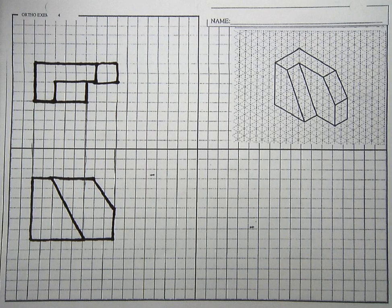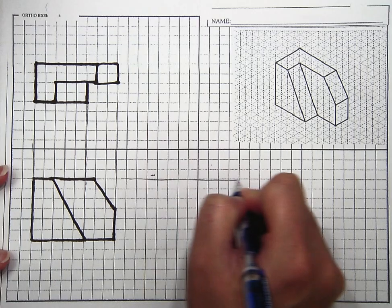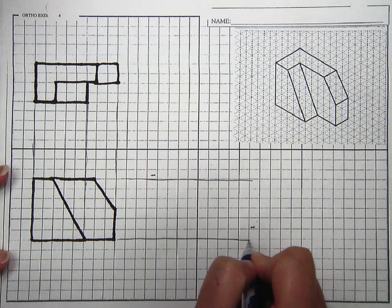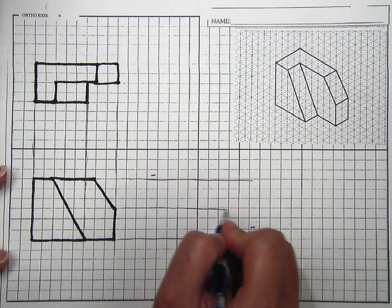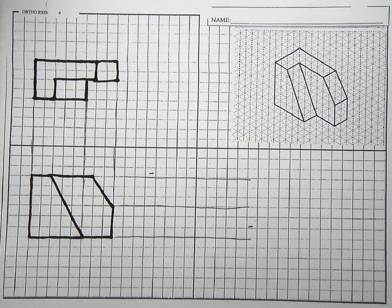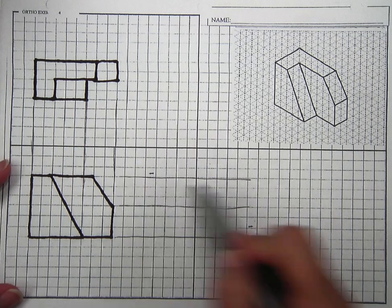Now I'm ready to draw my right view. Again, I'm just going to go ahead and use these construction lines so that I can see where I'm going to have some edges. And you want to keep those lined up.